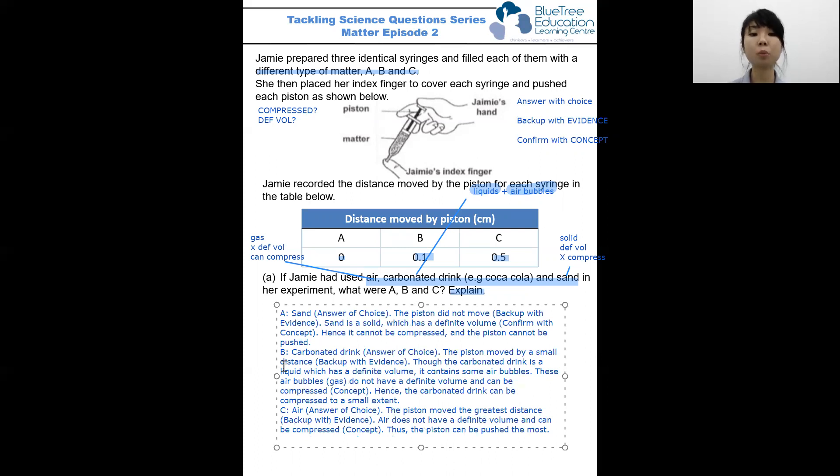Moving on, B will be the carbonated drink. Why? Because the evidence tells us that the piston moved by a small distance, and the concept is carbonated drink is a liquid, but it has air bubbles inside, which does not have a definite volume and can be compressed. So the carbonated drink can be compressed to a small extent.